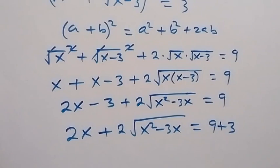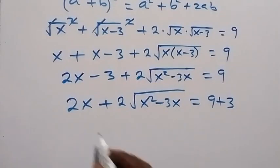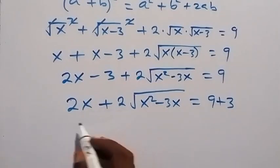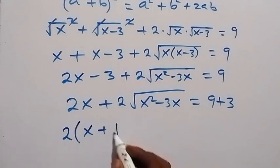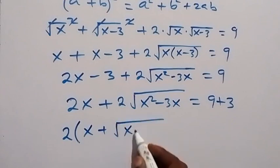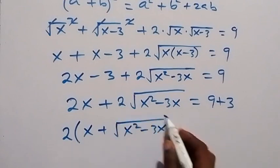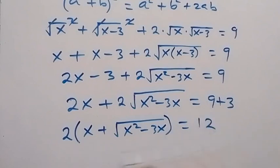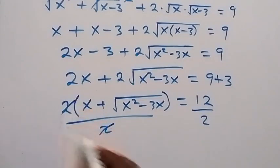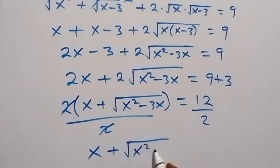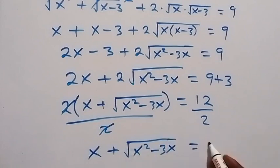That gives us 12. So we factor 2 out and we have 2 times the bracket x plus root of x squared minus 3x equals 12. Dividing both sides by 2 gives us x plus root of x squared minus 3x equals 6.